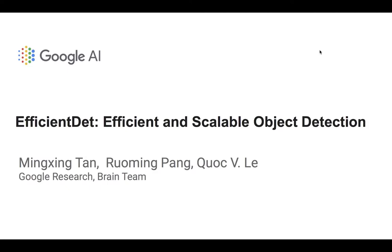Welcome to another video. This video covers the EfficientDet paper, which is a follow-up to EfficientNet. EfficientNet tackled the problem of classification, whereas EfficientDet tackles more dense prediction tasks like object detection and segmentation. I have a video on EfficientNet if you want more detail, but I'll briefly cover everything relevant for EfficientDet here. Just as EfficientNet tried to tackle efficient classification, EfficientDet does the same but for detection and segmentation.